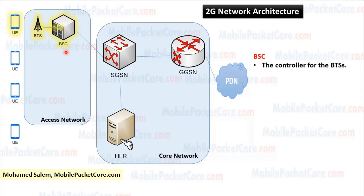The BSC connects to the SGSN. The SGSN is the entry point for the core network. The SGSN authenticates the UE and tracks its location.